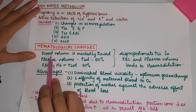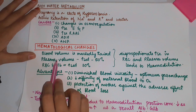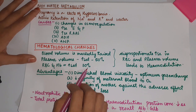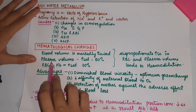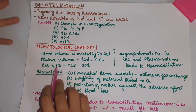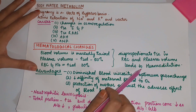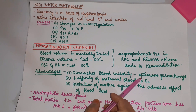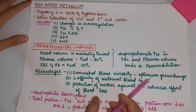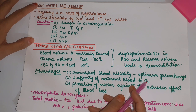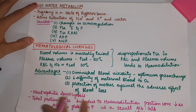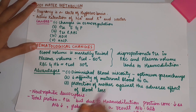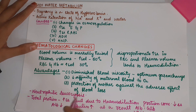Hematological changes: in pregnancy, blood volume is markedly raised. Plasma volume increases by 50% and RBC and hemoglobin increase by 30%. The increase in plasma volume is much higher than the increase in RBC and hemoglobin — this disproportionate increase leads to hemodilution. Advantages of hemodilution include diminished blood viscosity, optimum gas exchange, decreased affinity of maternal blood to oxygen, and protection of the mother against adverse effects of blood loss during delivery.